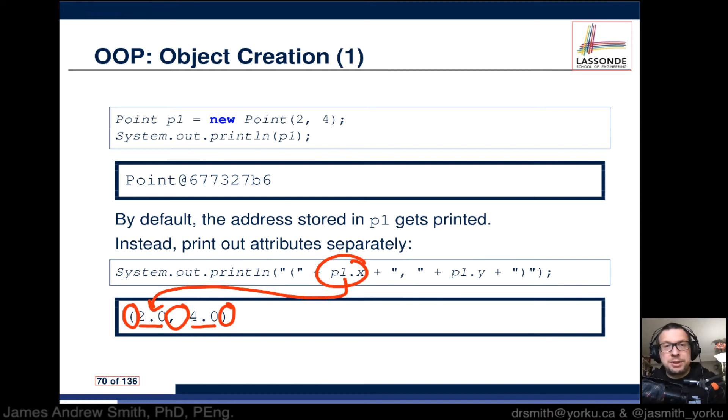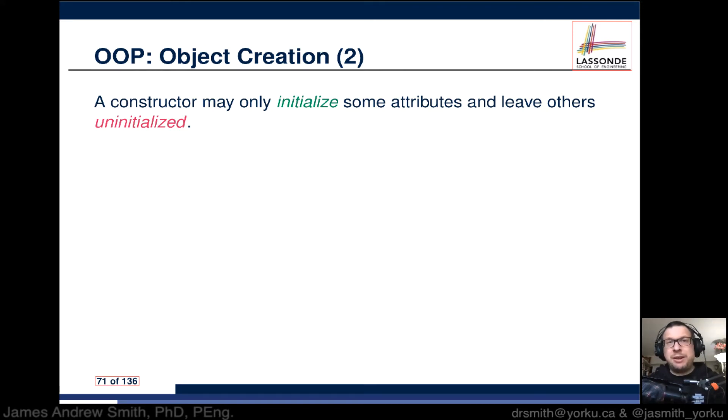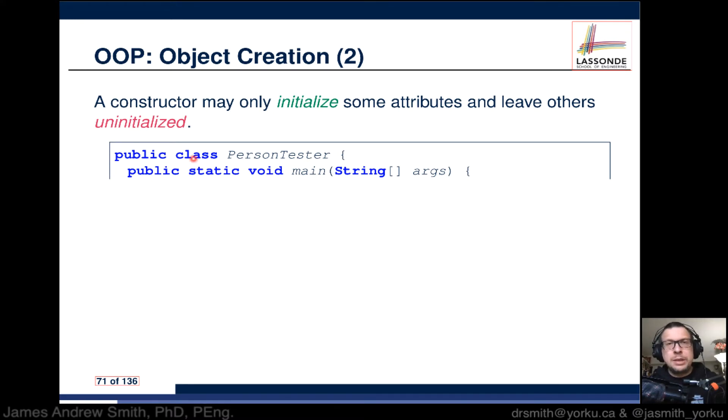So we'd print something like this: the x value, the y value, the comma and space, and your closing and opening parenthesis. That's typically what we actually want to be printing out when we are looking at our objects. A constructor may only initialize some attributes and leave others uninitialized. Here's an example: we got a class called PersonTester, and in it we've got our main method, and we're going to construct Jim from our constructor.